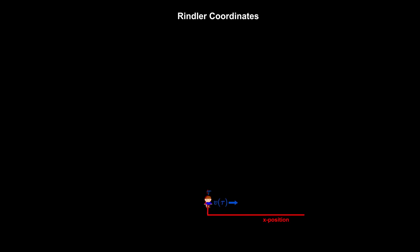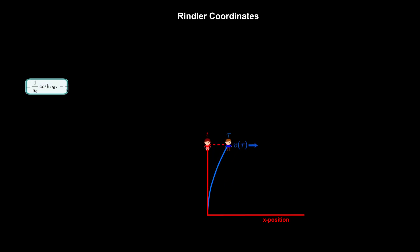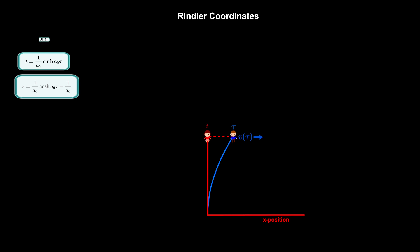Rindler Coordinates. Remember Bob and Alice from our previous video entitled Constant Acceleration? Alice stayed at home while Bob rocketed off, accelerating at a constant rate relative to his rest frame. We arrived at the following three results.